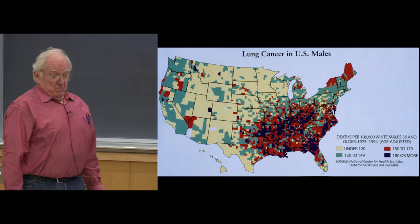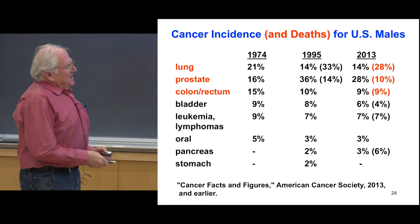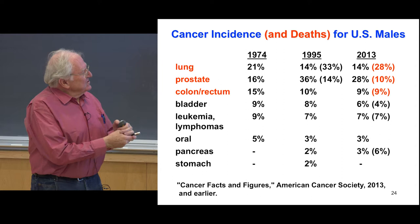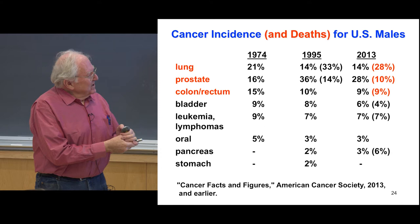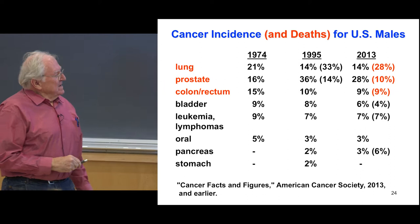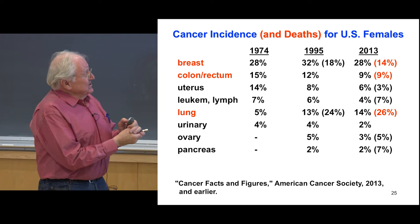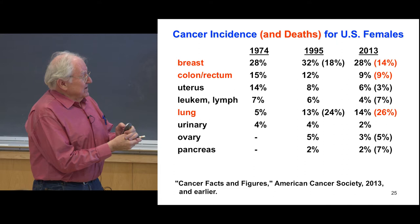Looking at cancer incidence and death rates from 1974 to the present: lung cancer is going way down in males, though it's still a major leading cause of death. Prostate cancer is going down as well. Colon cancer going down too. The big change has been in females with regard to smoking — lung cancer was very low in 1974, but it's nearly tripled now, and it is the leading cause of cancer death in women.